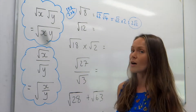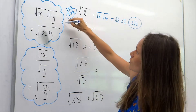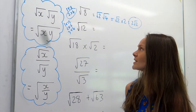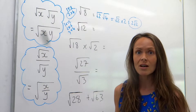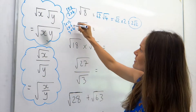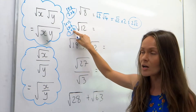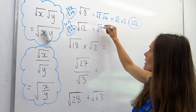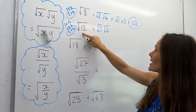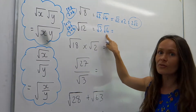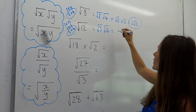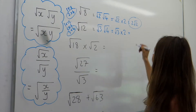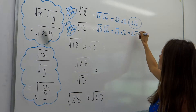Now I'm going to do the same thing, splitting 12 up into its factors. We've got more choices this time: 1 times 12, 2 times 6, or 3 times 4. You need to choose the pair that includes a square number, so it's 3 times 4 because 4 is a square number. I'm going to rewrite root 12 as root 3 multiplied by root 4. The square root of 4 is 2, so I'm left with root 3 multiplied by 2, which I tidy up to 2 root 3.